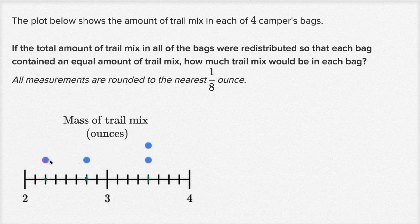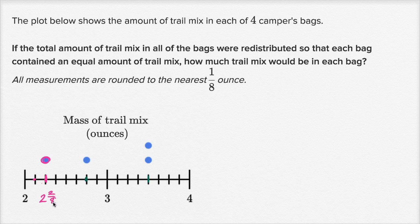We have this bag right over here, and it says rounded to the nearest eighth of an ounce. Between two and three is divided into eight sections, so each of these hash marks are an eighth. So this is two and one eighth, two and two eighths. Now two eighths is the same thing as one fourth — divide two by two and eight by two, and you get one fourth. So two and two eighths is the same thing as two and a fourth.